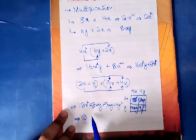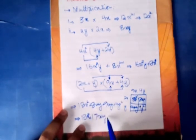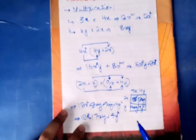I will add these 9 and 8, so this will be 18x square plus 17xy plus 4y square.